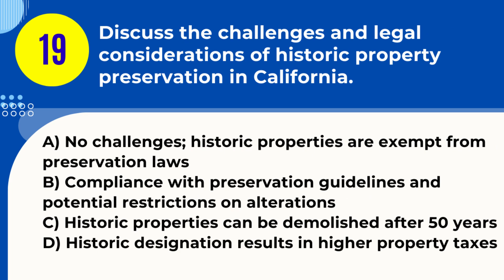Question 19. Discuss the challenges and legal considerations of historic property preservation in California. A. No challenges; historic properties are exempt from preservation laws. B. Compliance with preservation guidelines and potential restrictions on alterations. C. Historic properties can be demolished after 50 years. D. Historic designation results in higher property taxes. Answer: B. Compliance with preservation guidelines and potential restrictions on alterations. Explanation: Owners of historic properties in California must comply with preservation guidelines and may face restrictions on making alterations to maintain the property's historic character.